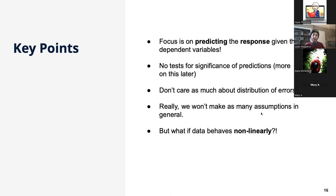Why do we make so many assumptions in statistics? It's mostly because of the significance tests. For our significance tests to hold — for us to be able to jump to conclusions — all of those assumptions have to hold, or else the mathematics behind the tests break. But we are not making any tests anymore, so we don't care as much about those assumptions. And since there are no tests, in machine learning we are freer to experiment with nonlinear models.